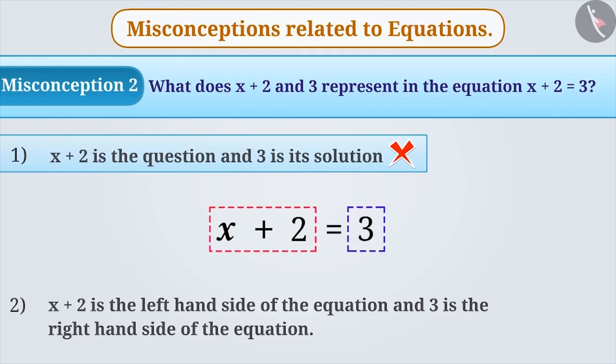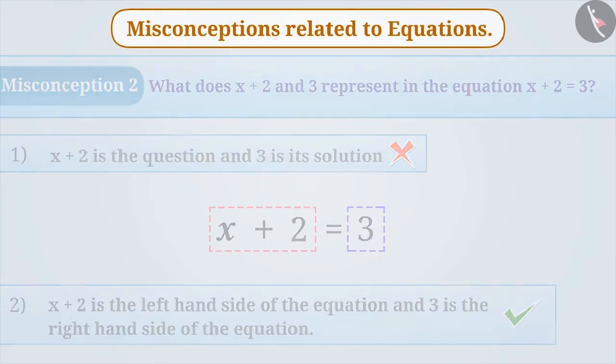Whereas, the correct understanding is that x + 2 is the left-hand side of the equation and 3 is the right-hand side.